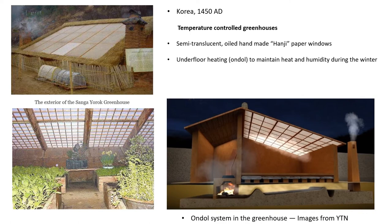By the year 1450 AD, building of greenhouses became popular worldwide. In Korea, very uniquely designed greenhouses appeared with an underfloor heating system called ondol, whose working has been discussed in the first lecture. Ondols helped in maintaining heat and moisture inside the greenhouses. Additionally, cob walls helped in insulating heat. The roofing and windows were covered with semi-translucent oiled handmade papers called hanji, whose making has already been discussed in the first lecture.